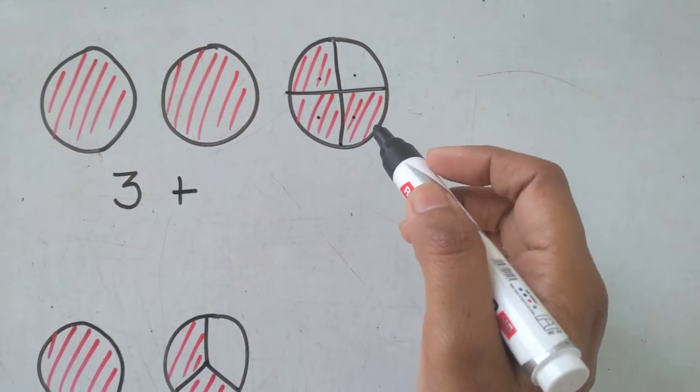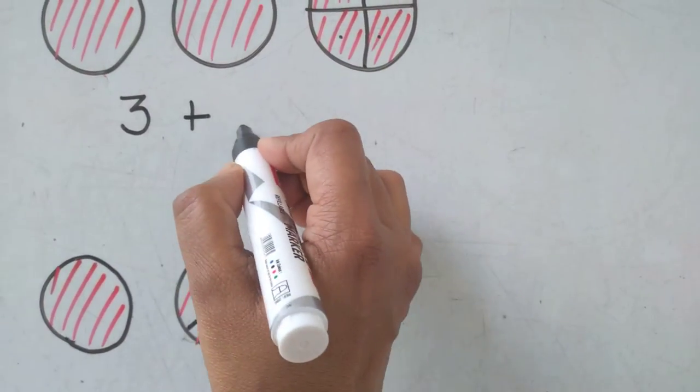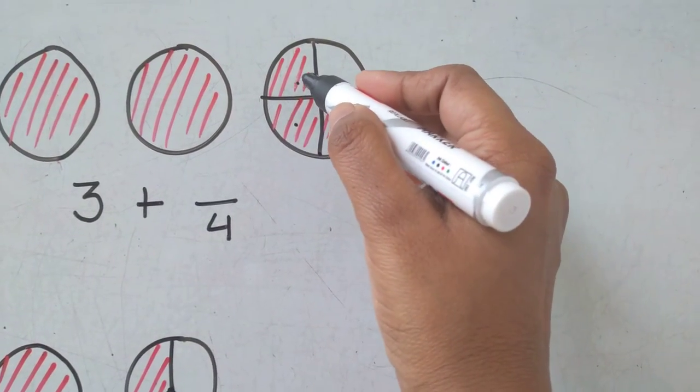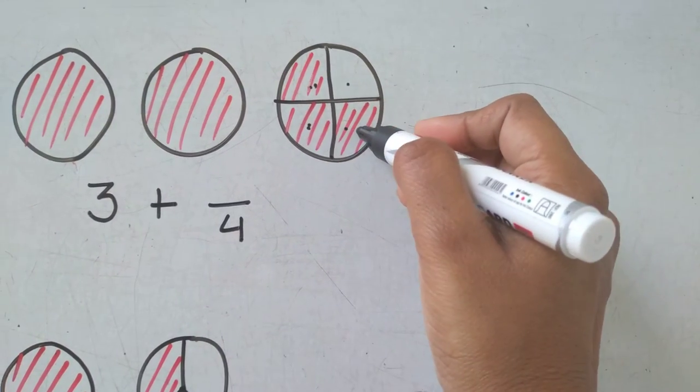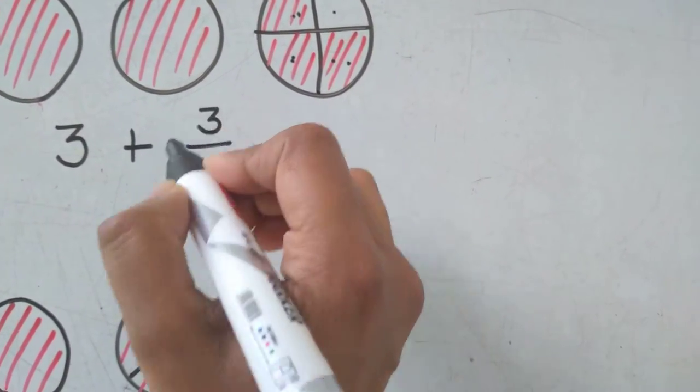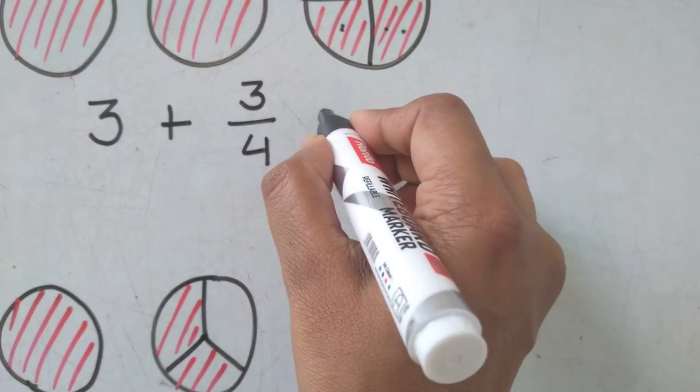The figure is divided into four equal parts, so that four will be written as the denominator. Out of four, three are shaded - one, two, three - and that three will be written as the numerator. Got it? Now this can be written as three plus three-fourths.